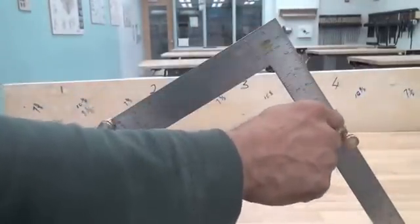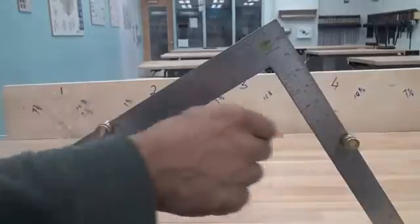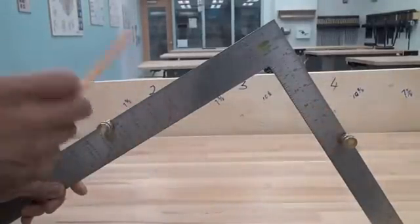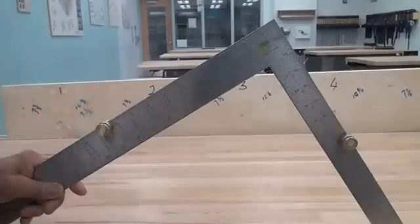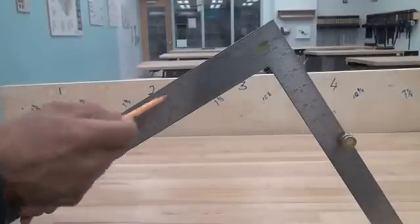So it goes up, comes down, and if we were to go straight across, we have the hypotenuse of the right triangle. And those are the right triangles that we're going to cut out of our stair carriage later as we transfer these marks onto the wood.